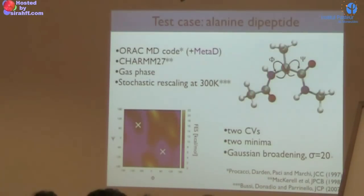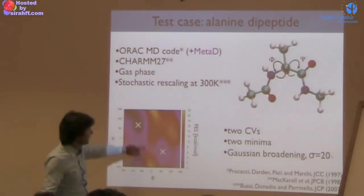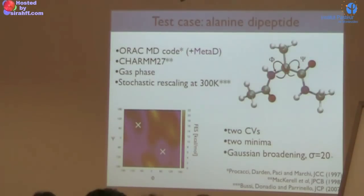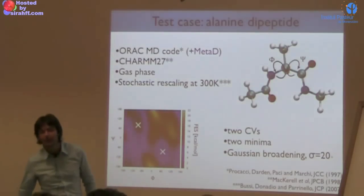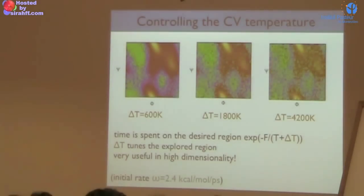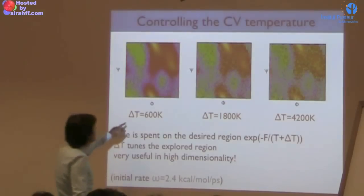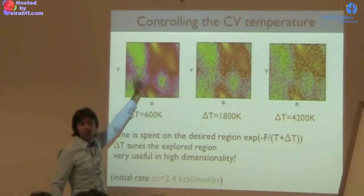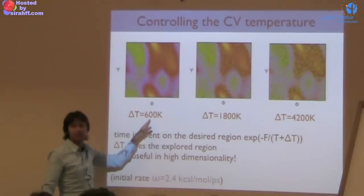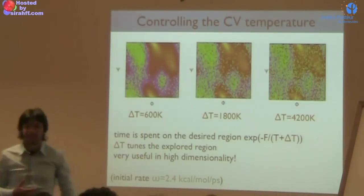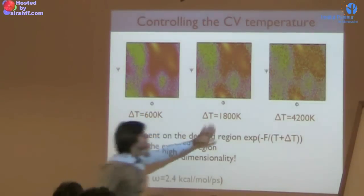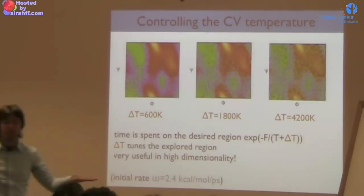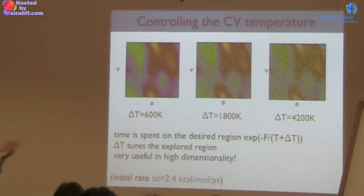We ran different well-tempered metadynamics simulations on a two-minima system using different choices of delta_T. If delta_T is small, you sample only the low energy states but still pass the barrier since even a small delta_T is sufficient. As you increase delta_T, you explore more and more; at very high delta_T you explore everything. This is good if you want to explore everything, but can be bad in 2-3 dimensions if you want to focus on physically relevant regions. This argument holds equally for temperature-accelerated MD — you fix T-bar for the same reason: you don't want to explore everything blindly.